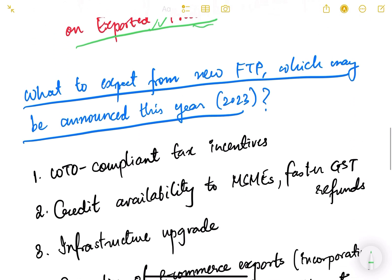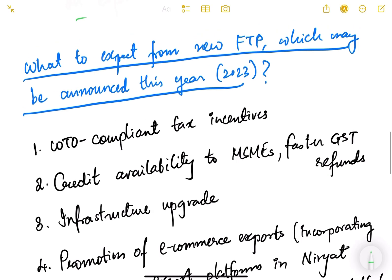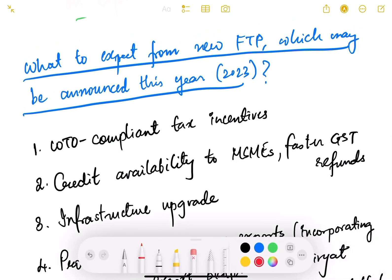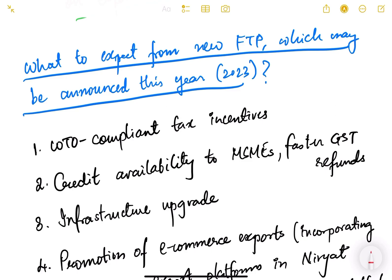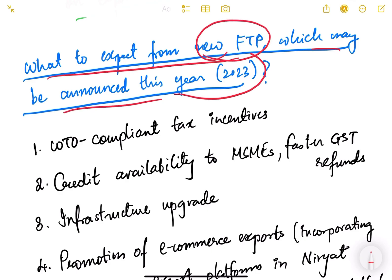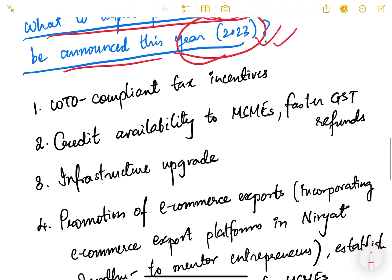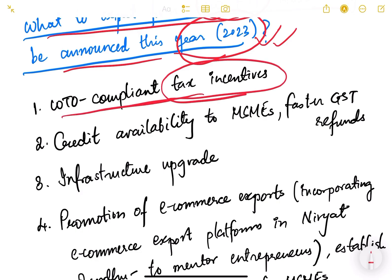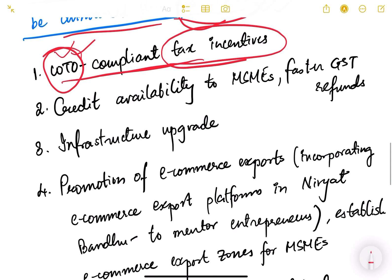Because of all these issues, what can we expect from the new foreign trade policy? Whenever there are issues in the existing policy, we bring a new policy and make improvements. The new FTP may be announced in 2023. First of all, we need WTO-compliant tax incentives — the incentives should not in any way go against WTO norms and guidelines. We should design them very intelligently.